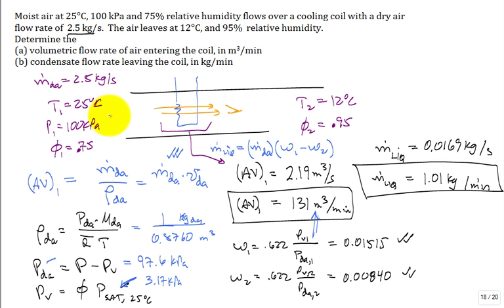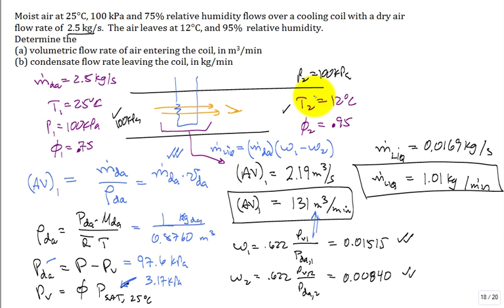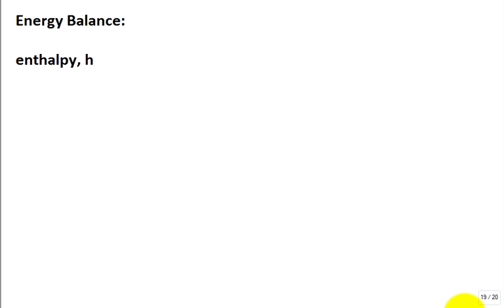In response to a question: yes, the total pressure at state 2 remains 100 kPa. In a real duct system there would be a small pressure loss due to friction, but it's negligible. Next time we'll cover energy balances for moist air problems. There is also a test scheduled.